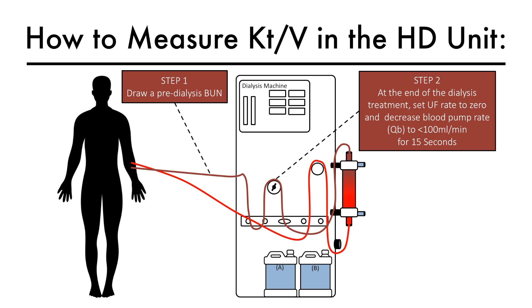Step 2, at the end of the dialysis treatment, slow the blood pump rate on the hemodialysis machine to less than 100 mL per minute for 15 seconds or so.